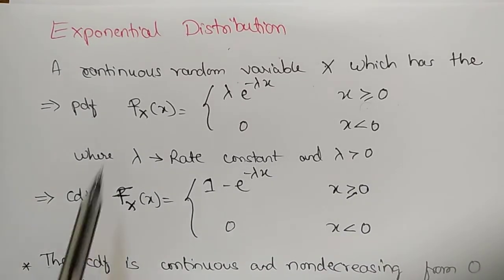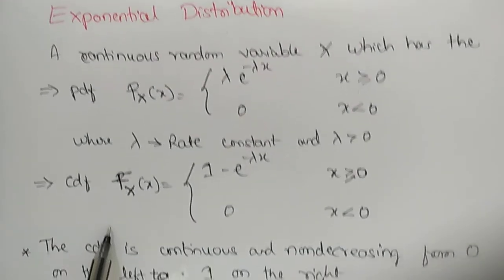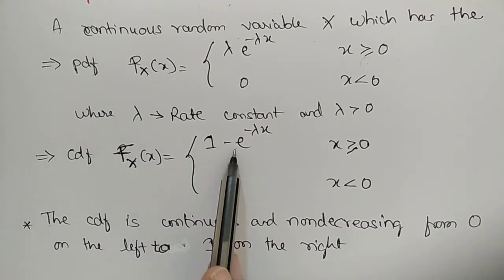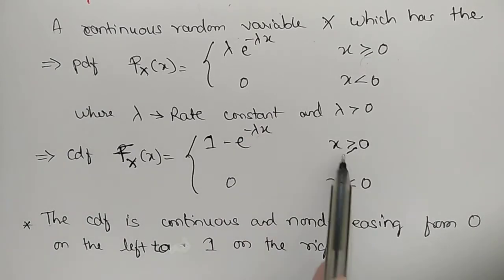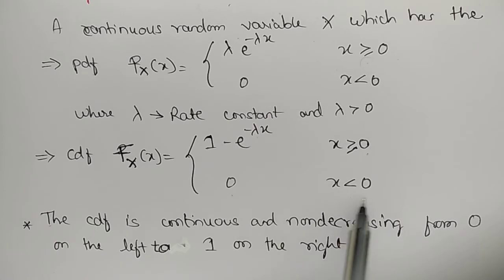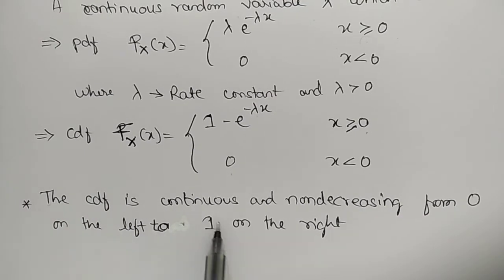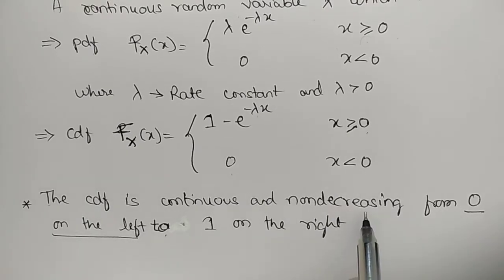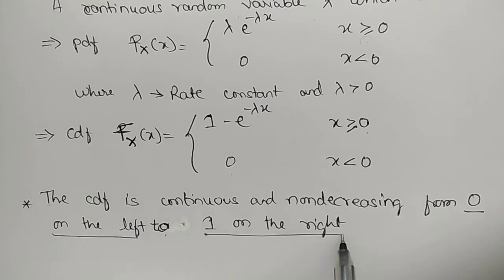The CDF for the exponential distribution is given by F(x) = 1 − e^(−λx) when x ≥ 0, and 0 when x < 0. The CDF is continuous and non-decreasing from 0 on the left to 1 on the right.